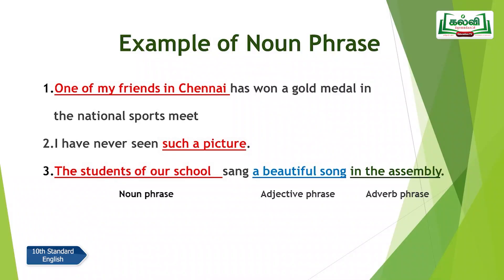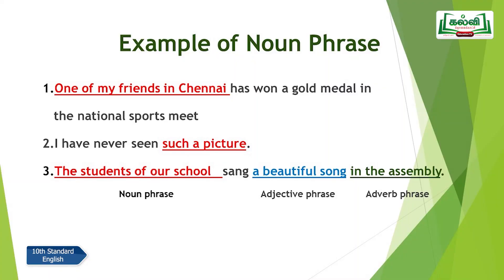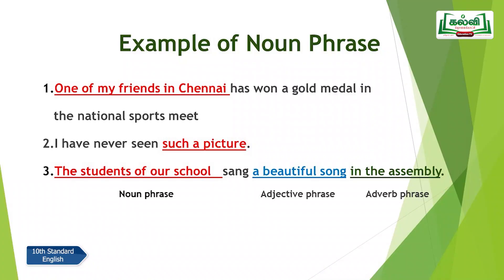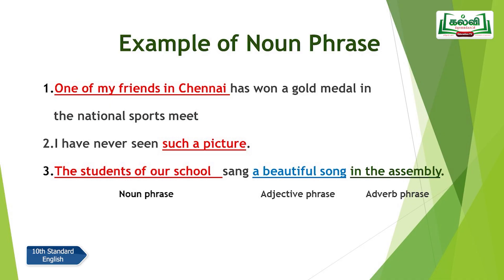The third example combines a noun phrase, adjective phrase, and adverb phrase together in one sentence: 'The students of our school sang a beautiful song in the assembly.' 'The students of our school' is a noun phrase acting as the subject. 'Sang' is the verb in past tense. 'A beautiful song' is the adjective phrase — we added 'beautiful' as a group of words describing 'song'. 'In the assembly' is the adverb phrase showing where — a group of three words without a finite verb.